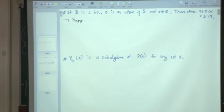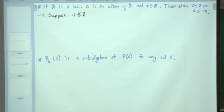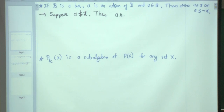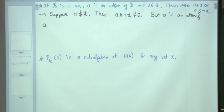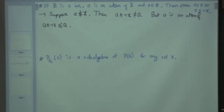Suppose A is not less than or equal to X. You remember there is a property that A ≤ ¬Y if and only if A ∧ Y = 0. Using the same thing, A ∧ ¬X is not equal to 0. But A is an atom and A ∧ ¬X ≤ A, because the meet of two elements is less than or equal to either one of them.